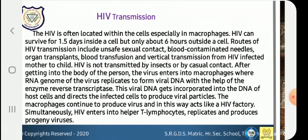The routes of HIV transmission include: unsafe sexual contact, blood contamination — transmission through blood and blood products, contaminated needles which must be sterilized — and organ transplant. These are the transmission methods.